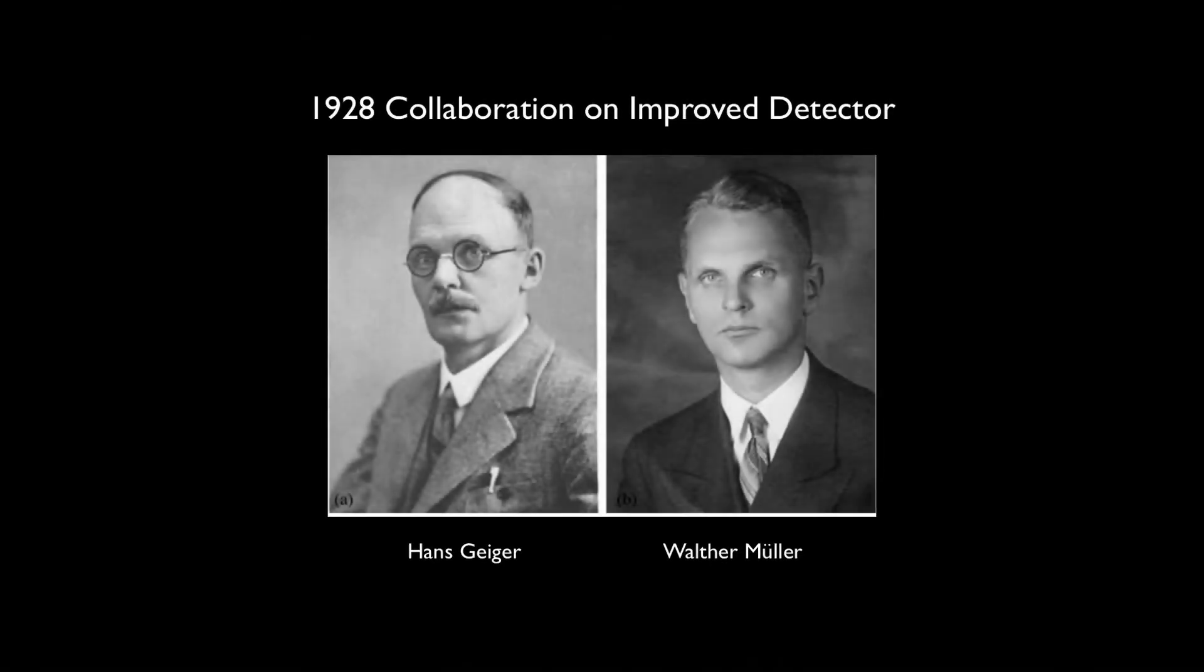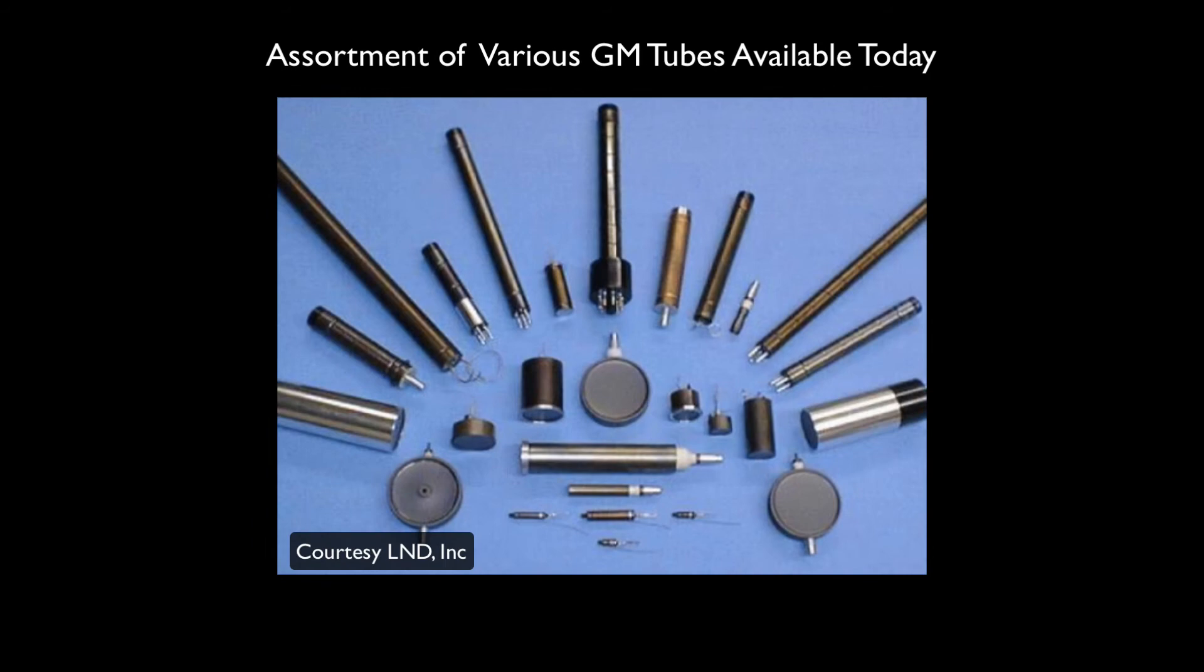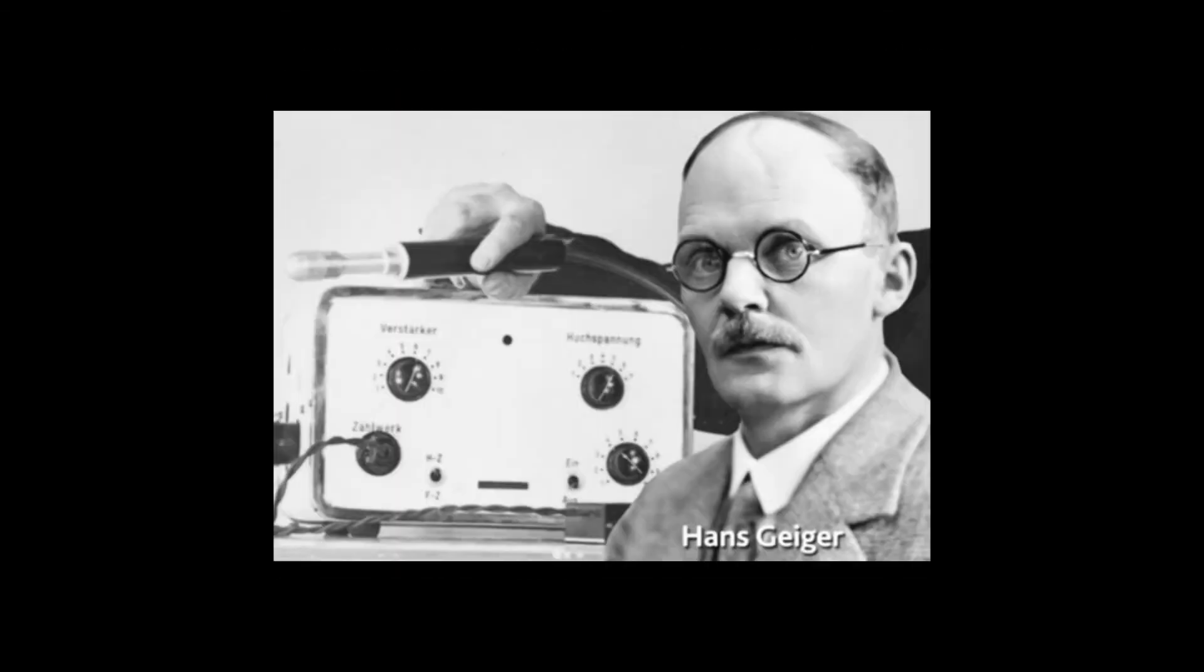Later in 1928, Hans Geiger working together with the Walter Mueller at the University of Kiel in Germany improved upon the alpha detector so it also became sensitive to beta particles and gamma photons. This new alpha beta gamma radiation detector became known as the Geiger Mueller detector or GM detector that we know today. When connected to an electronic counter, the instrument became known as the Geiger counter.